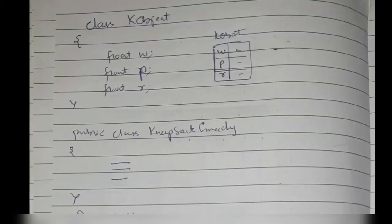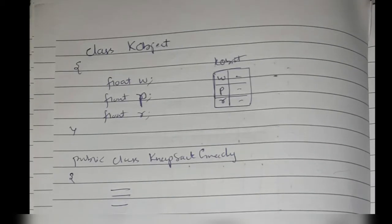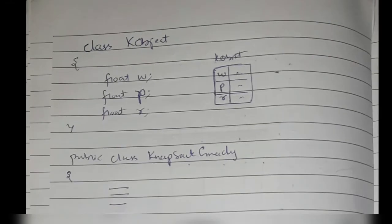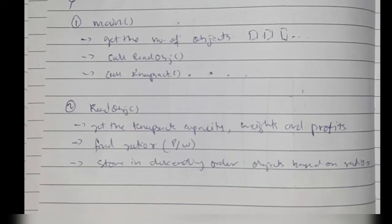We have a class Object here, and the public class KnapsackGreedy. In this class we create a k object that has three parameters: weight, profit, and ratio. We'll be discussing what these three things do in the program.